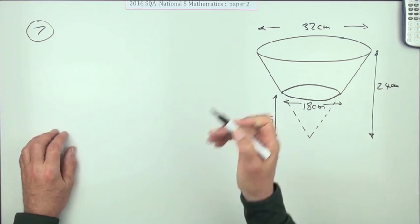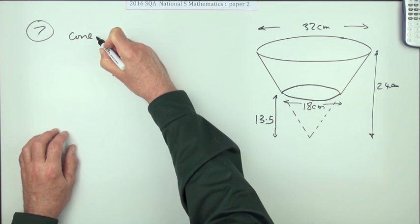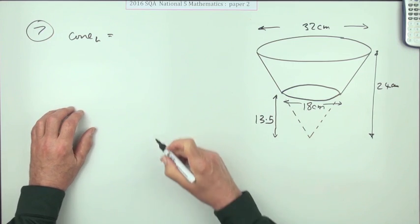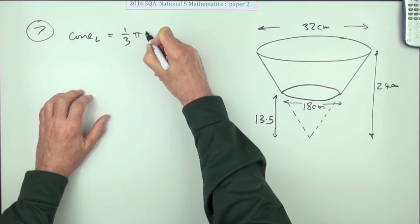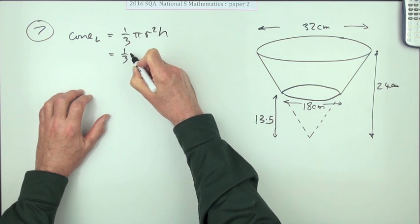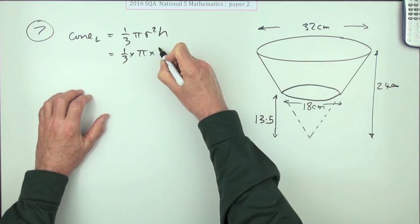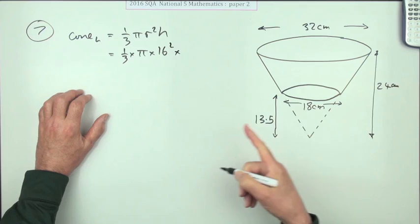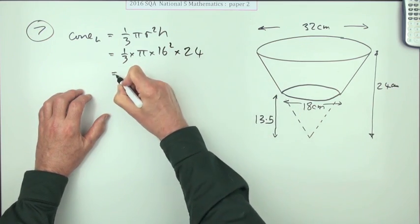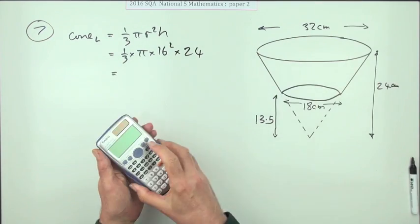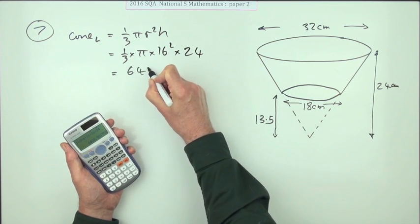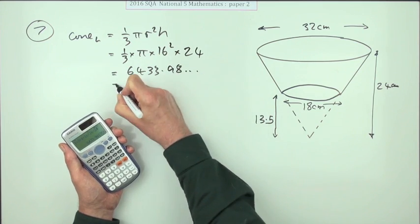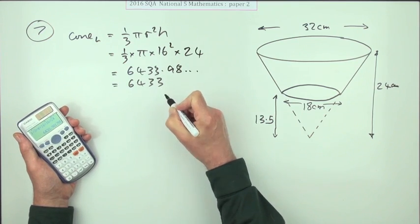So we'll just start off. Cone large for the big one. The formula is at the front: one-third pi r squared h. One-third times pi times, now that'll be a 16, 16 squared times, and its height's 24. Now just press the buttons and you get, pressing that again, 6433.98 and so on. I think I'll just keep the whole number part because that's got plenty of figures in it and then round it off at the end. Centimeters cubed.